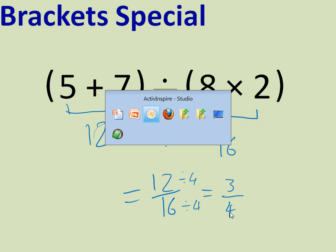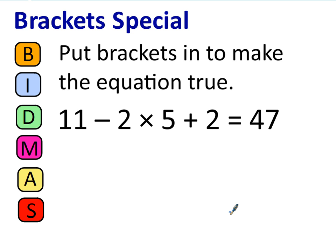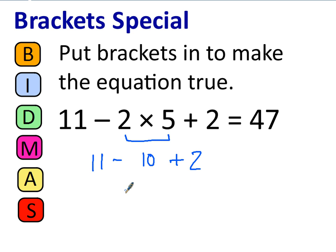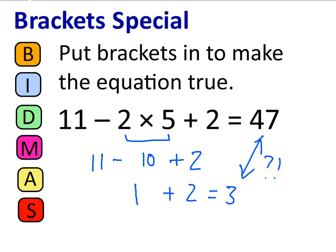Let me return to one final thing involving brackets in BIDMAS — the kind of question where you're given an equation and need to put brackets in to make both sides balance. We've got 11 take away 2 times 5 plus 2 equals 47. If we do it without brackets, we do the multiplication first to get 10, then 11 take away 10 add 2 — working left to right gives 1 add 2 equals 3. Clearly that's not 47, so we're missing brackets.